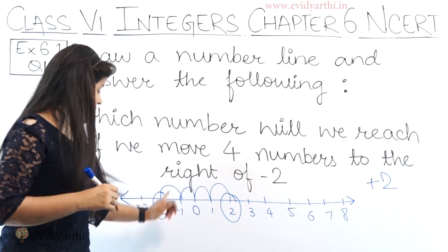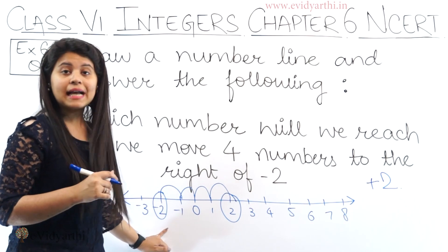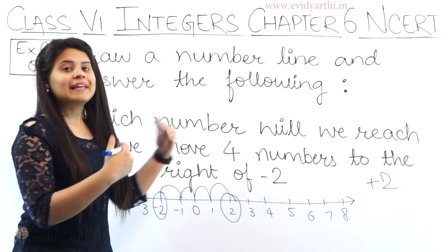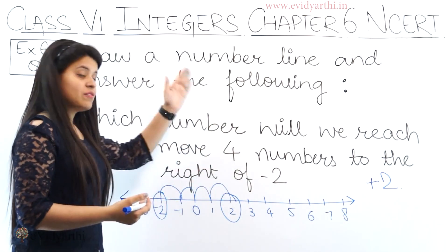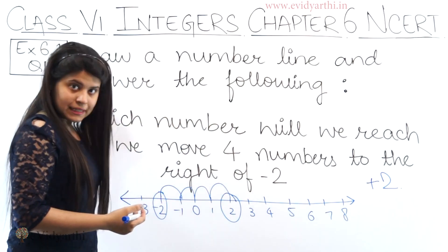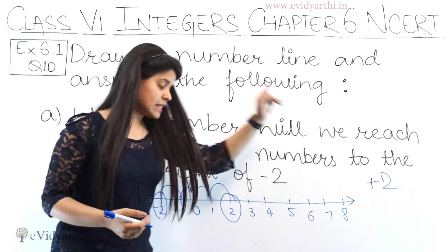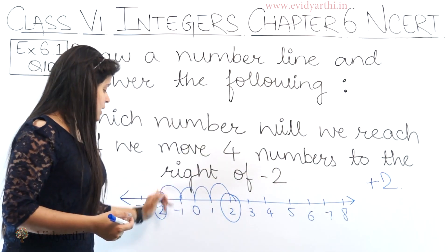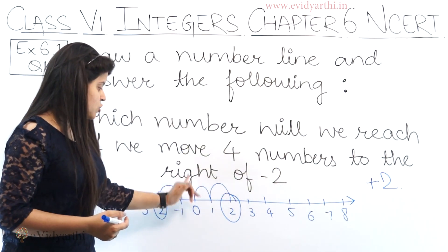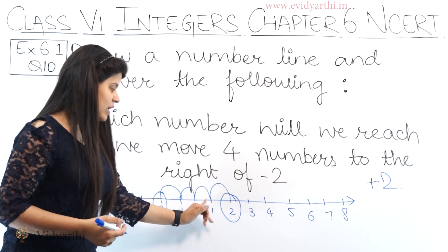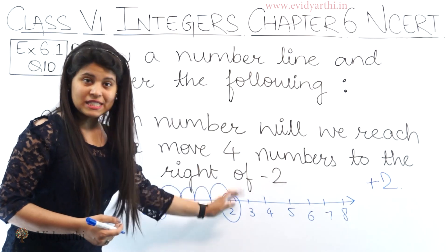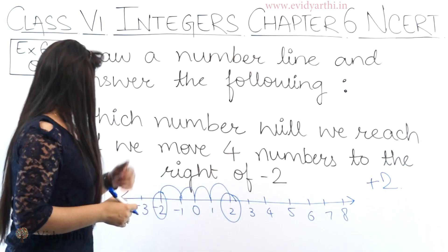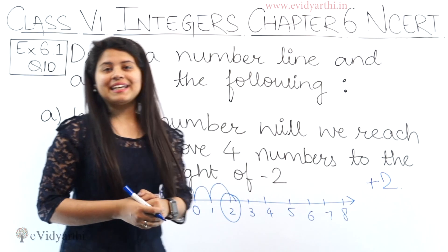We have minus 2 given. We have to start 4 numbers to the right side. So from minus 2: 1, 2, 3, 4 steps — and we will reach 2. So this was part number A.